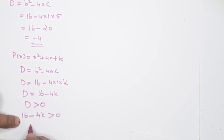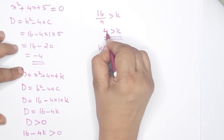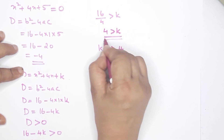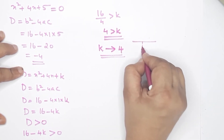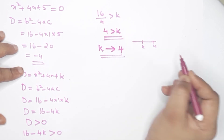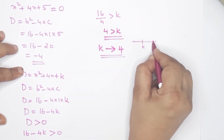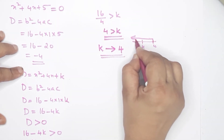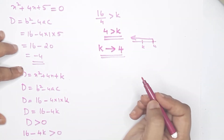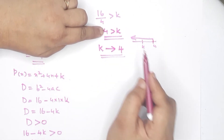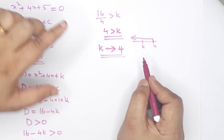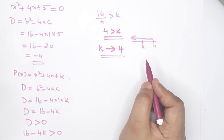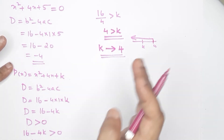We need 16-4k ≥ 0, which gives 16 ≥ 4k. Therefore k ≤ 4. Any k value less than or equal to 4 will allow p(x) to be factorized.